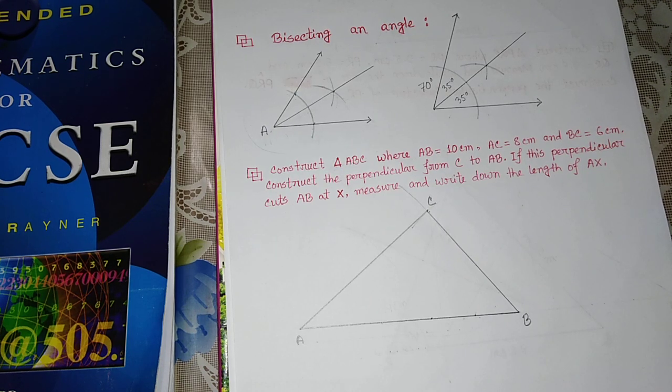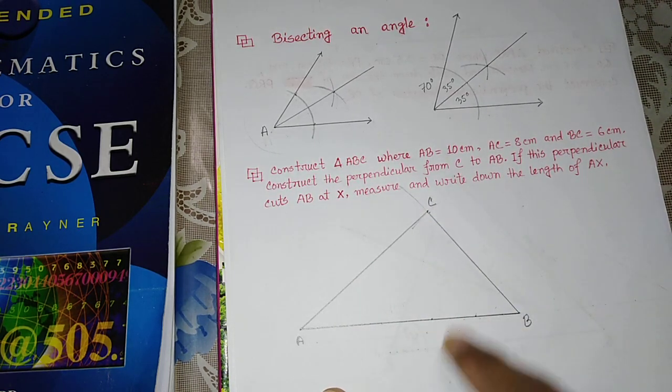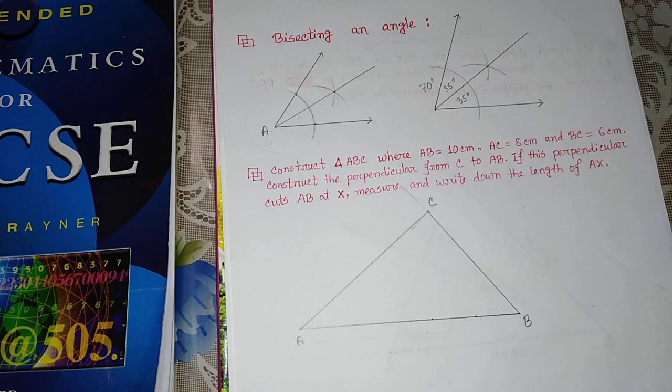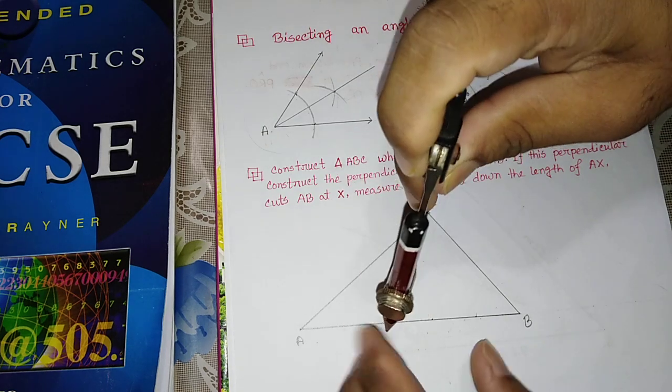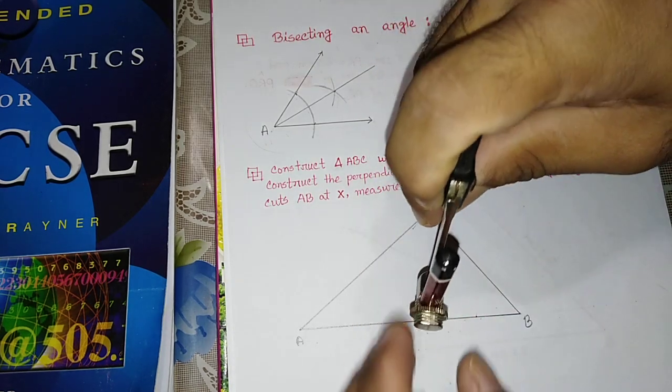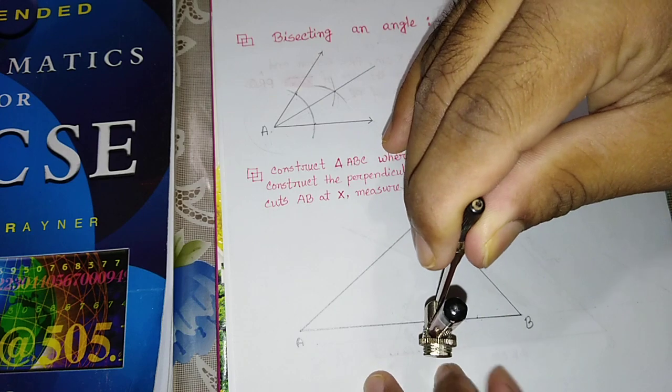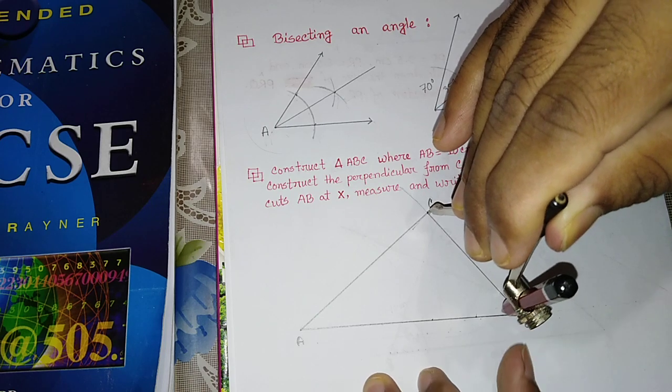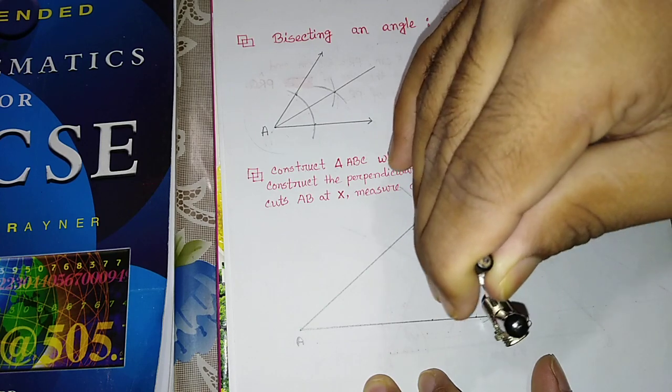We will draw the perpendicular from C to AB. The distance from C to the line is our radius. This is the AB line, and we mark two points. We will draw the arcs. The distance is created on both sides.